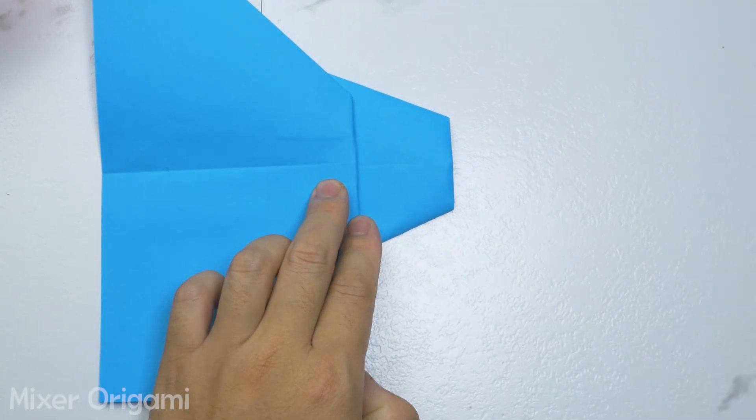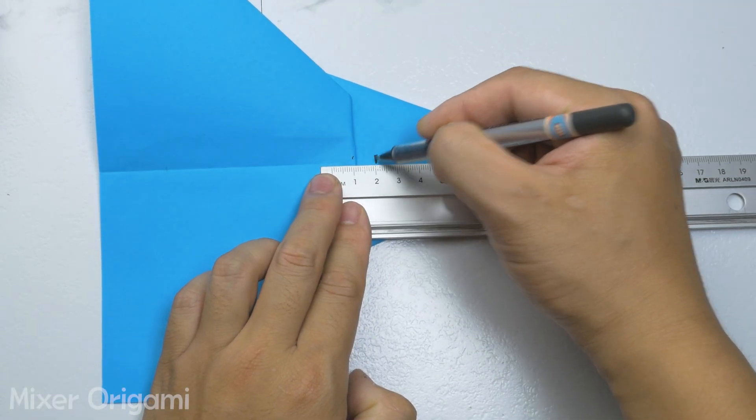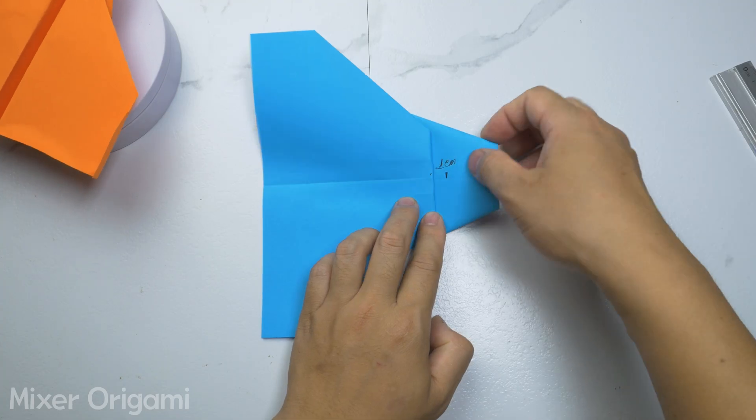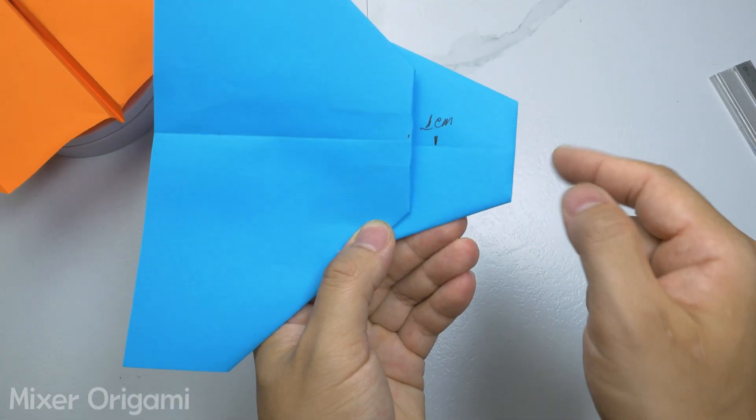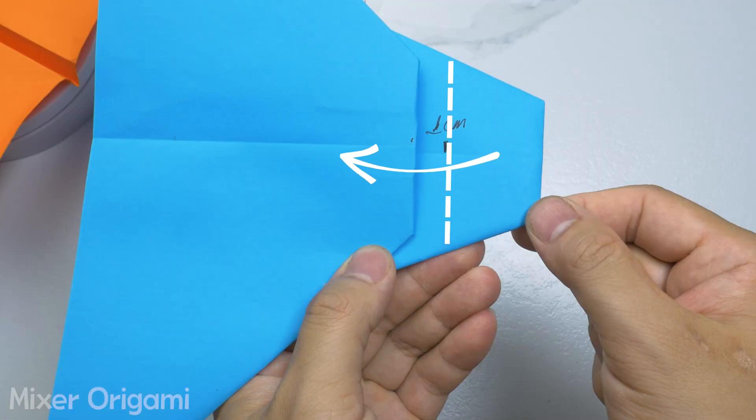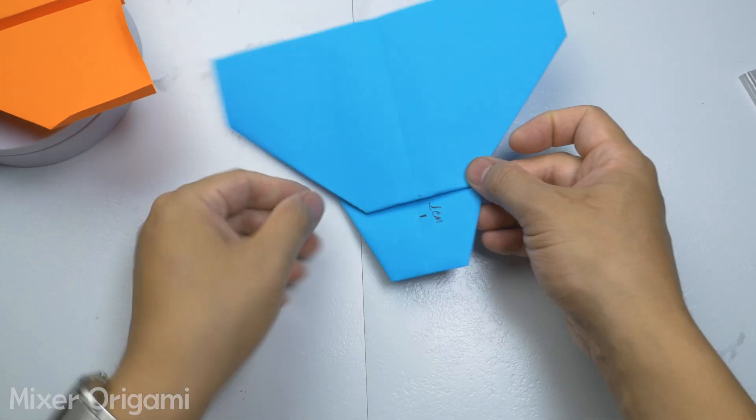Step 11. Mark a point one centimeter from the top of the airplane and fold the nose of the airplane back. Note: The more times you fold, the greater the bulge and deformation of the paper. Try to flatten it by using a ruler to smooth it out.